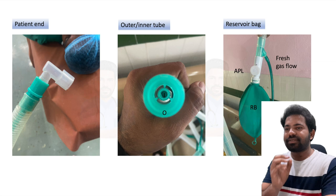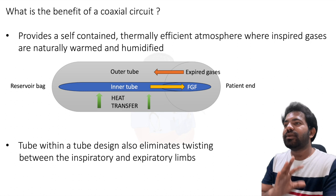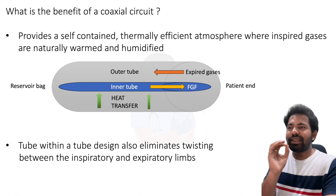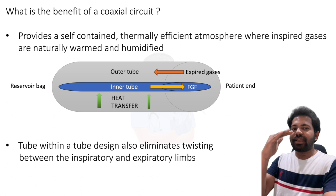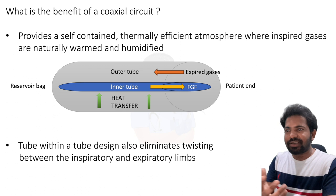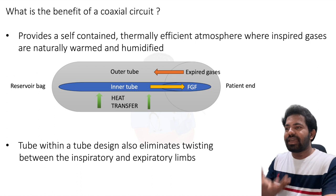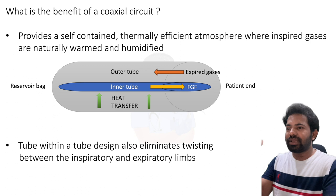The benefit of making it coaxial is that it provides a self-contained, thermally efficient atmosphere where the inspired gases are naturally warmed and humidified by the expired gases passing from the outer tube toward the inner tube. Cold gases are always irritating to the airway, so there is natural humidification and warming. You can see heat transfer from the outer tube gases to the inner tube, with fresh gas flow and expired gas flow moving in opposite directions.